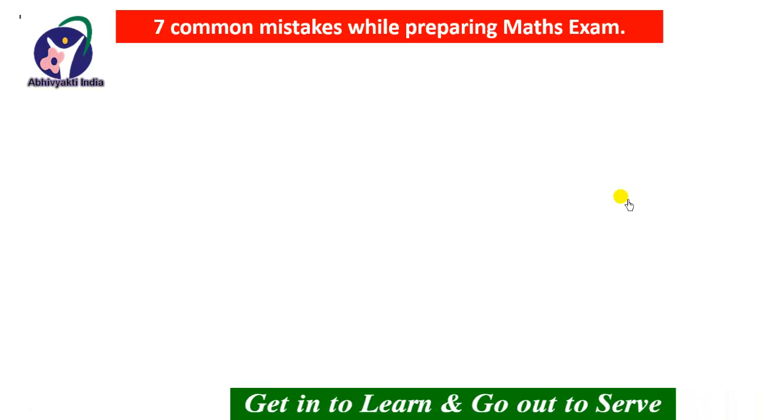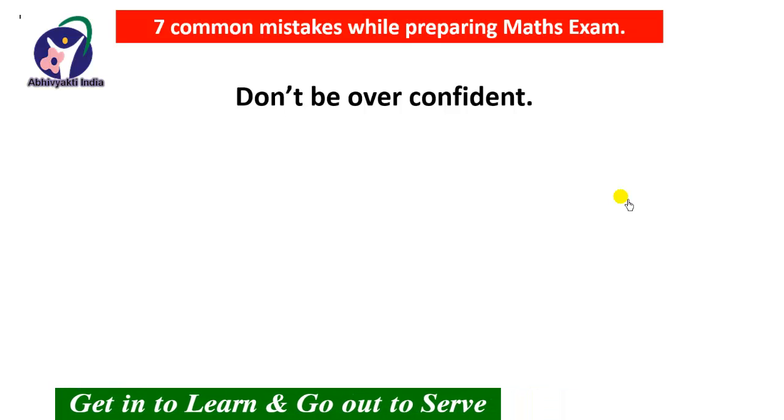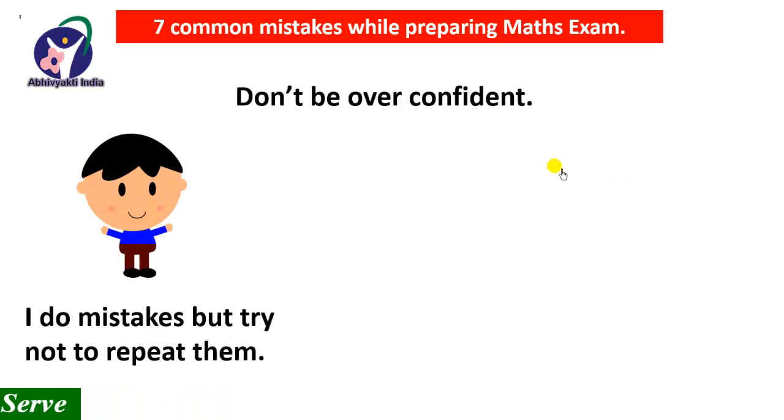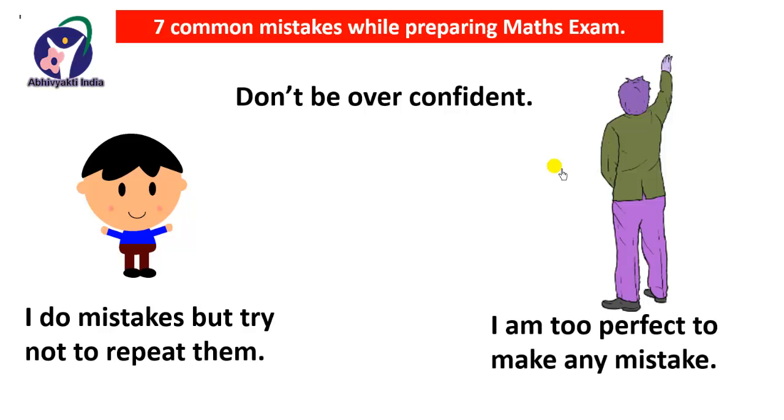The second tip is do not be overconfident. You will ask what is the difference between a confident student and an overconfident student. A confident student says I do mistakes but try not to repeat them. An overconfident student says I am too perfect to make any mistake. This is the main difference between confident and overconfident students.